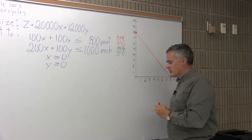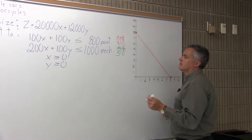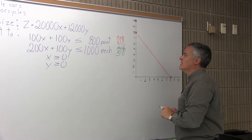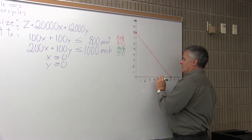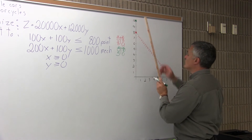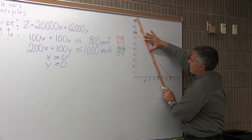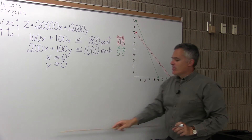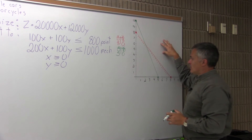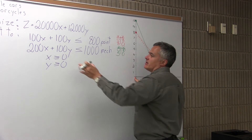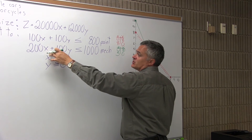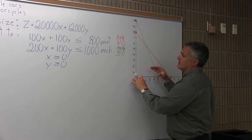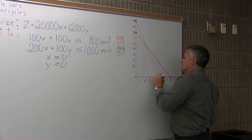The other constraint for mechanical time, which I have drawn in green — let me put that on my graph. One point for the mechanical constraint is (0, 10), so I put a green dot at over 0, up 10. The other point was (5, 0), so I put a green dot at over 5, up 0. I connect my green dots with a green line. I have to decide whether to shade below or above the green line — same process, using test point (0, 0).